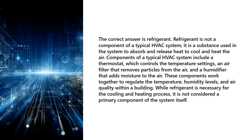Components of a typical HVAC system include a thermostat, which controls the temperature settings, an air filter that removes particles from the air, and a humidifier that adds moisture to the air. These components work together to regulate the temperature, humidity levels, and air quality within a building. While refrigerant is necessary for the cooling and heating process, it is not considered a primary component of the system itself.